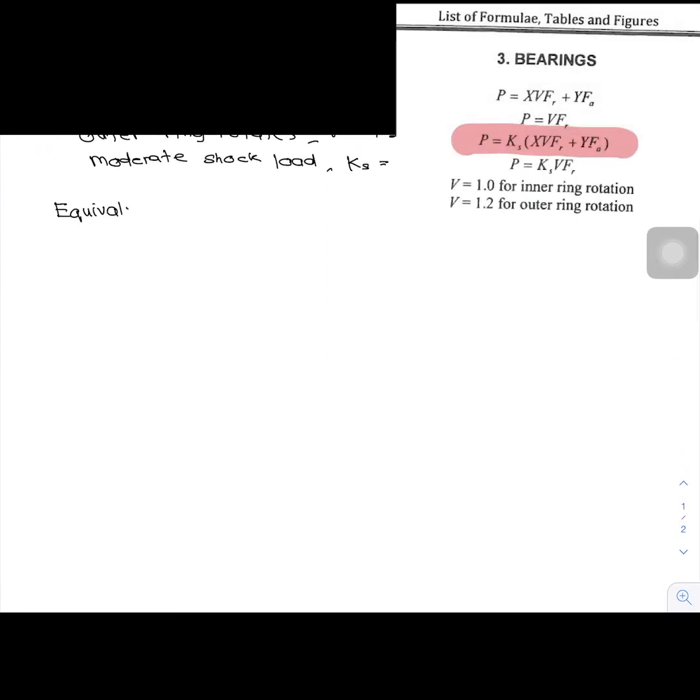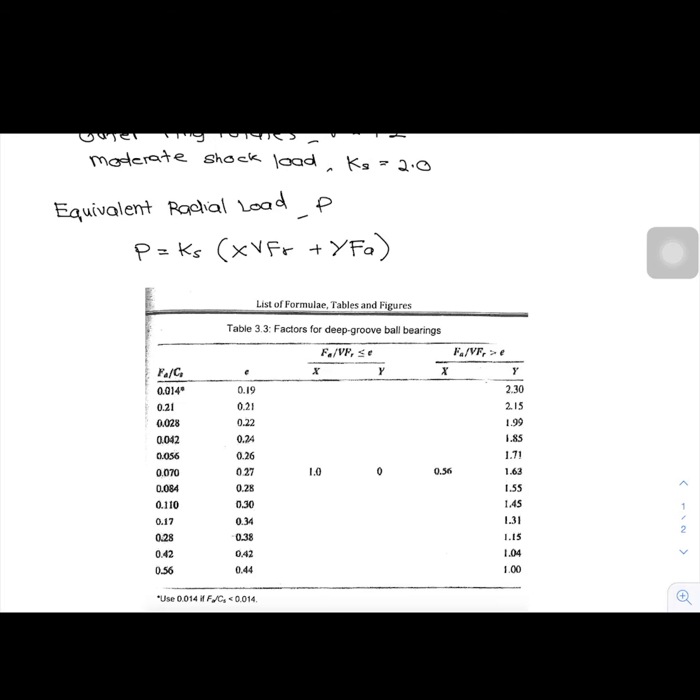The first question is to calculate the equivalent radial load. Since we have moderate shock load Ks, we use equation: P equal to Ks times X VFR plus Y FA. We already have the value of Ks, V, FR and FA. So, to find the value of X and Y, we must refer to table 3.3, since the deep groove ball bearing is used.